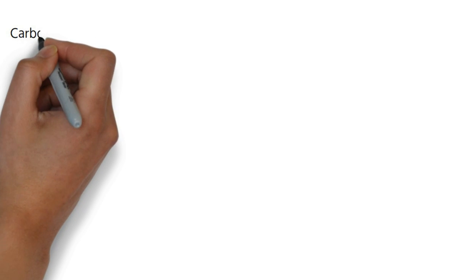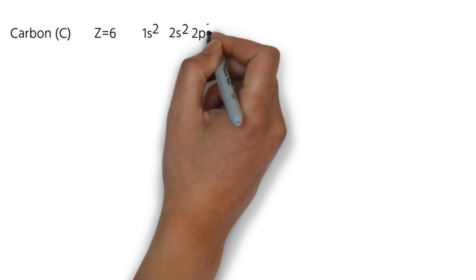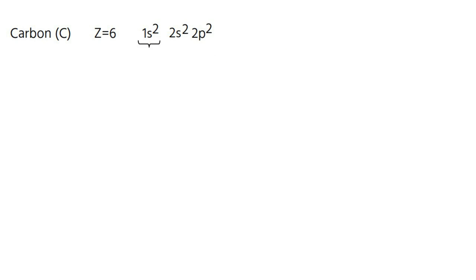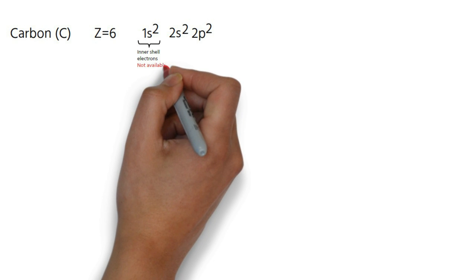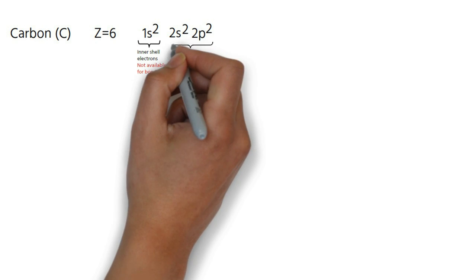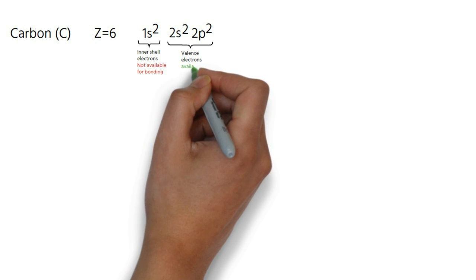We all know that the ground state electronic configuration of carbon atom is 1s2, 2s2, 2p2. We know, for any atom, these inner shell electrons are not available for bonding. Only these valence electrons are available for bonding.